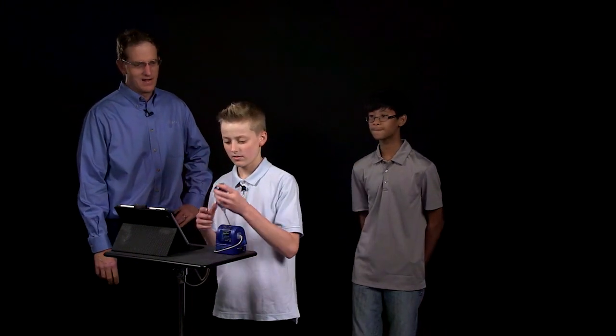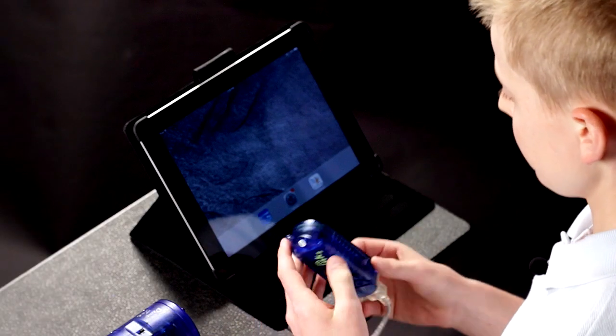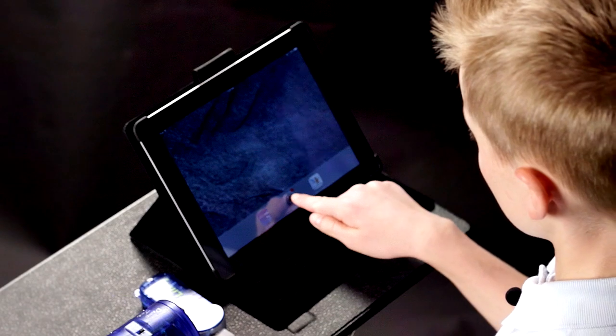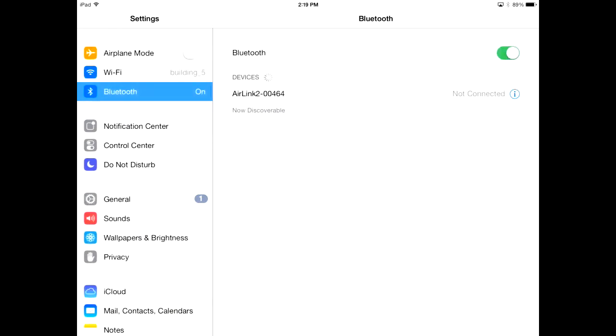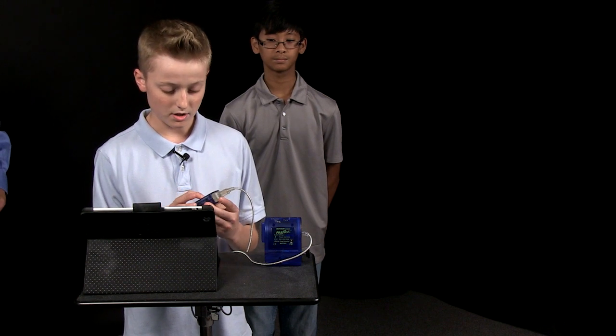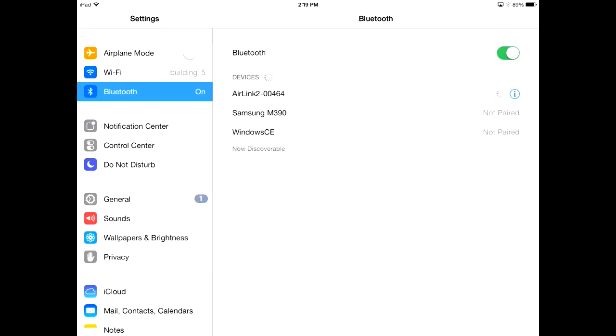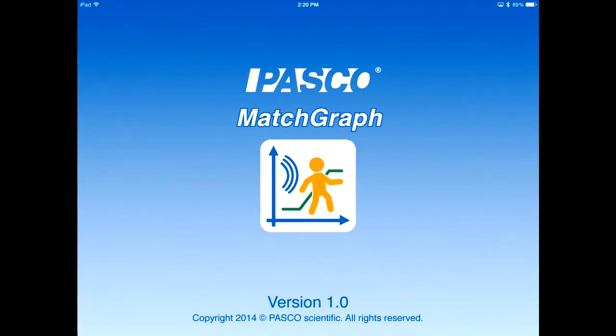Jacob, could you please show how we connect to it? Yes. The first step is to turn the Air Link on. There we go. The second step is to go to Settings, and I see I'm already on Bluetooth. And then you press the icon with the same code as the code on the back of the Air Link. And to Match Graph. All right. And then we're already connected here, so it's ready to collect data from the motion sensor to the app itself.